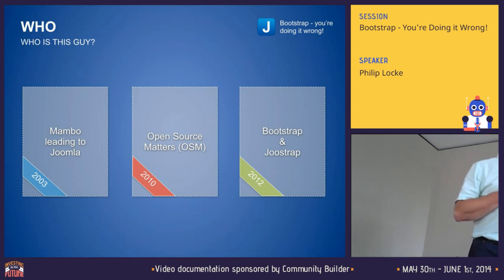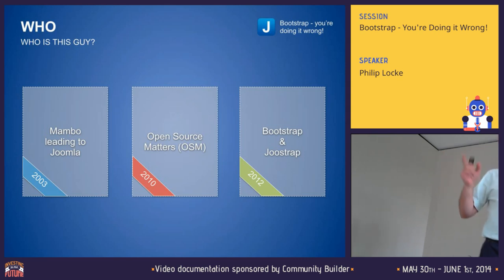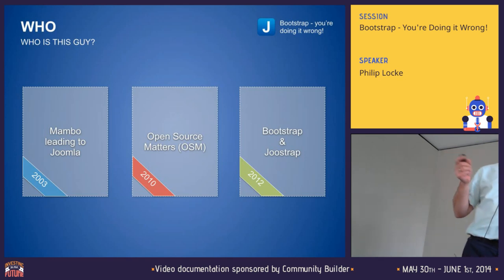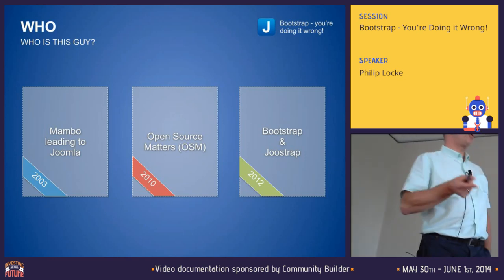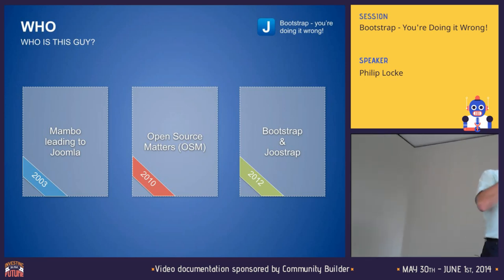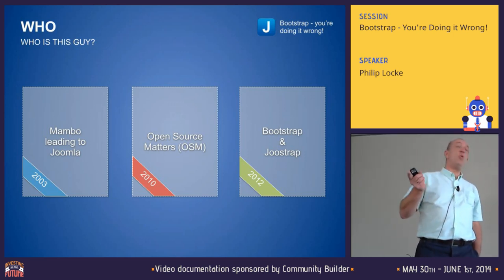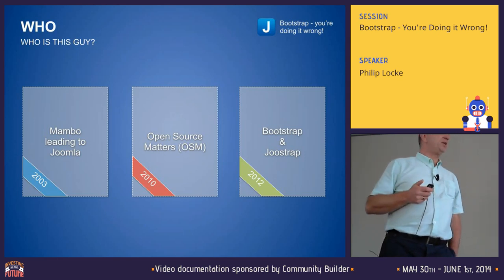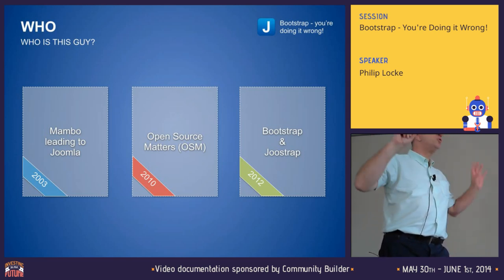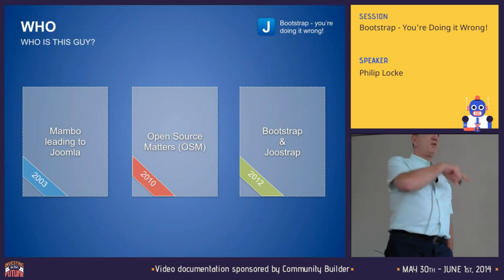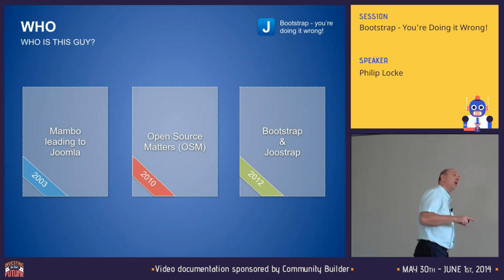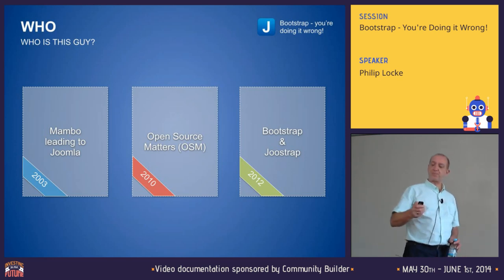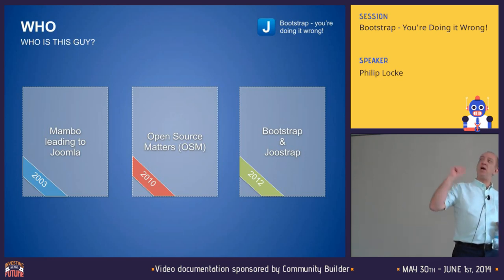In 2005 I was invited to be on the board of directors for OSM as the capital committee chair. In 2012 I stumbled across this thing called Bootstrap and I thought it was the way to go for mobile. I also created my own small template called Juice Strap. Luckily, Joomla decided to put Bootstrap in the core, so it was a happy mix — I was in the right place at the right time and went the right direction.